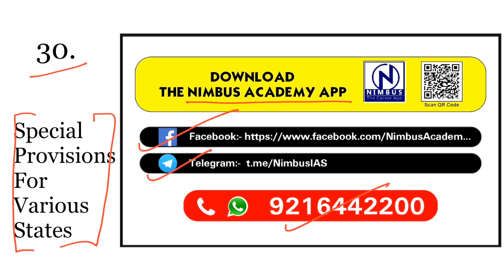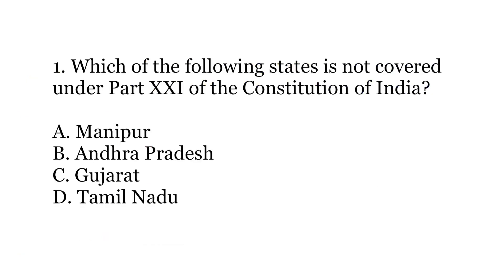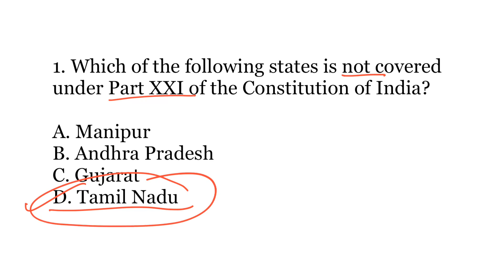First question: Which of the following states is not covered under Part 21 of the Constitution of India? Options: A) Manipur, B) Andhra Pradesh, C) Gujarat, or D) Tamil Nadu. The correct answer is D) Tamil Nadu. Part 21 deals with temporary, transitional, and special provisions, but Tamil Nadu is not one of those states — all other listed states are covered.